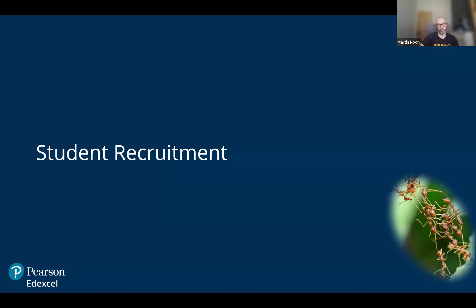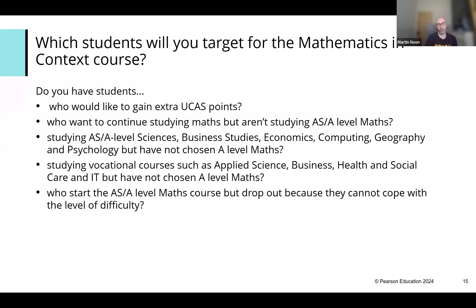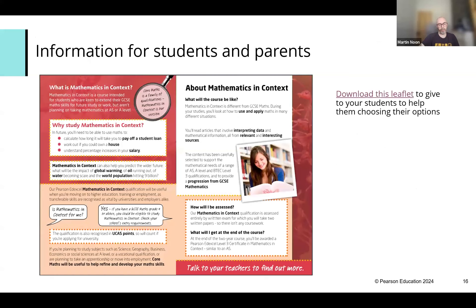How can we help to recruit students? We're looking at students who want to gain extra UCAS points, who liked maths but chose not to study AS or A-level. They may be studying sciences, business studies, geography, or psychology — subjects with mathematical components. They might also be on vocational courses with maths elements, or students who started AS maths and found it too hard, but don't want to stop doing maths entirely. A downloadable information leaflet is available on the Pearson website, with a link in your pack.